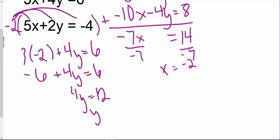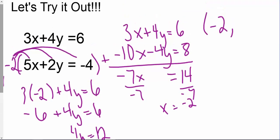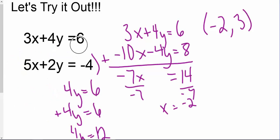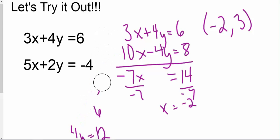Therefore y equals 3. So I believe the solution, the intersection point, is going to be negative 2 comma 3. But we always want to check to see if that works out. So I'm going to plug that into my bottom equation just to see.